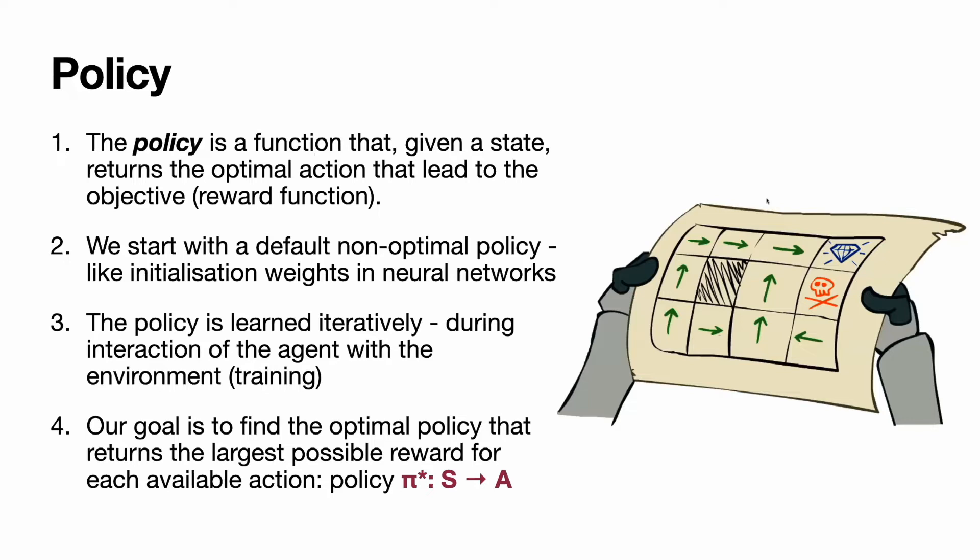Let's take closer look at this image. Here is the simple grid environment. Here is the state you cannot enter. This is the desired state, which gives us plus 100 reward. This is highly undesirable state, which gives us minus 100 reward.